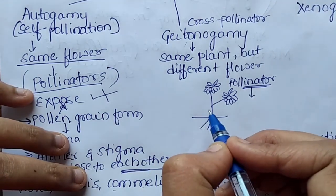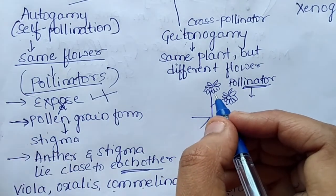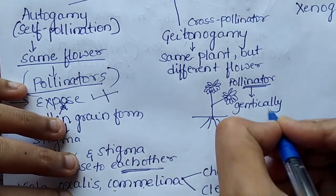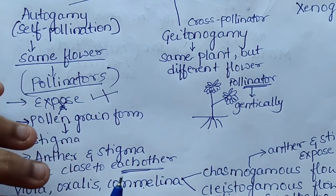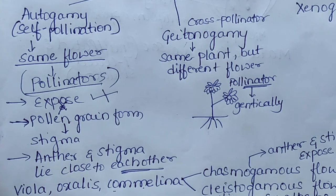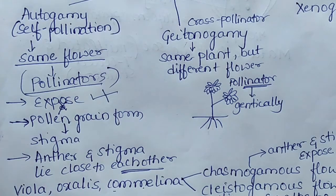In case of geitonogamy, genetically the plant will be the same, as there is no genetic change. Male gametophyte and female gametophyte are from the same plant, so the genetics do not vary. This is what is called geitonogamy.